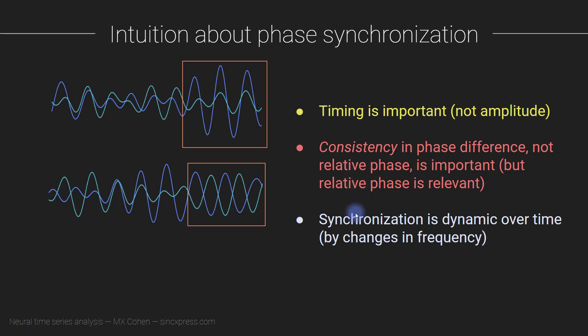All right, and then the third point is that synchronization, particularly in the brain, is dynamic over time. So you can have periods, time periods, where there is no synchronization, and then some number of cycles later, a little bit of time later. So here there's no synchronization. And then the brain can suddenly go into a regime where there is synchronization. So no synchronization followed by synchronization. And in general, the mechanism of these time varying changes in synchronization are subtle changes in frequency. So changes in frequency is one mechanism to change the timing of the phase values.